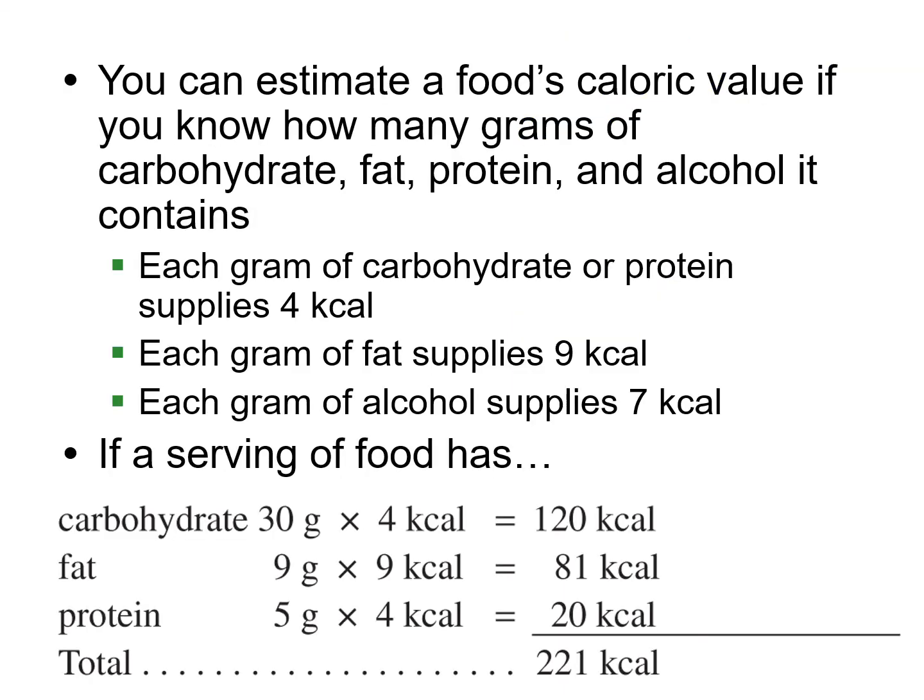On a food label, when you see a capital C for Calorie, that's actually a kilocalorie (kcal). There are two types: the little-c calorie and the big-C kilocalorie. To calculate calories, you take the amounts of carbs, fats, and proteins and multiply each by how much energy they provide, then add them up. This is what you see listed on food labels.